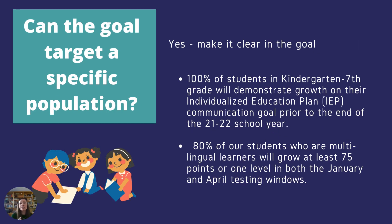Another question we get is: can your goal target a specific population? Yes, your goal can target a specific population. Your district or charter board might have specific guidance on this, but at the state level, as far as rule and regulations go, you can target a specific population however your council feels is appropriate. For example, that might be a goal that says 100% of students in kindergarten through 7th grade will demonstrate growth on their individualized education plan communication goal prior to the end of the 2021-2022 school year, targeting students with an IEP. Or your goal might say 80% of students who are multilingual learners will grow at least 75 points, or one level, in both the January and April testing windows.